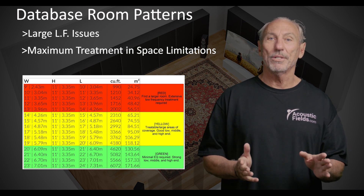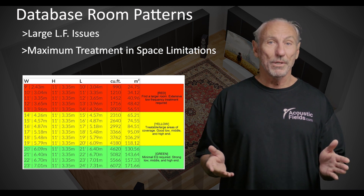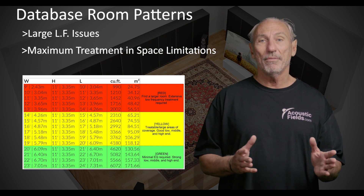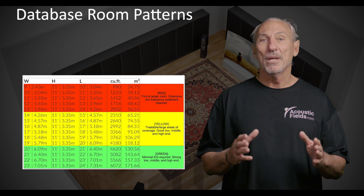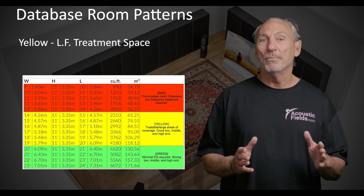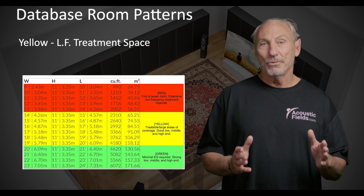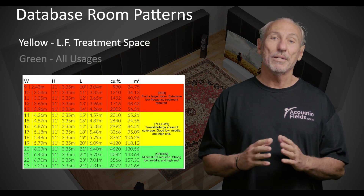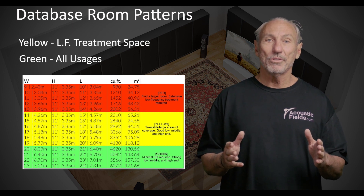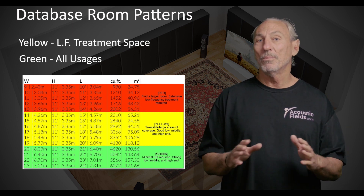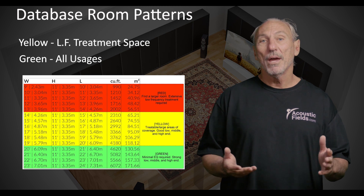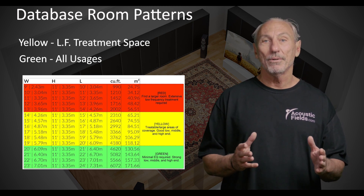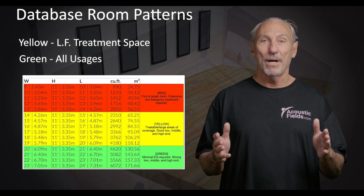The red is very, very small — great for vocals but not too good for anything else, so if you can find another room if your room falls in the red zone. The yellow zone gives us a little bit more square footage so we can treat the low frequency issues that the yellow zone gives us. And the green is ideal. The green zone has enough size and volume for almost any usage and, more importantly, enough space to treat everything. The bottom line here is all about usage, size and volume.